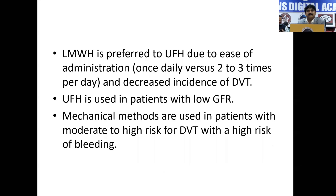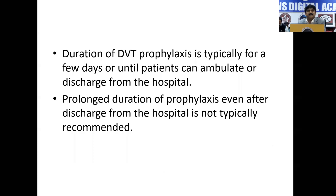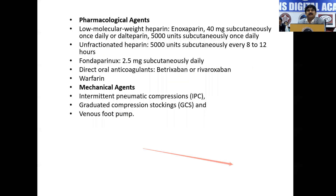Duration of DVT prophylaxis is typically for days or until the patient can ambulate and be discharged from the hospital. Prolonged duration of prophylaxis even after discharge is not typically recommended. Pharmacological agents: heparin — enoxaparin 40 mg subcutaneously once daily, or dalteparin 5,000 units subcutaneously once a day. Unfractionated heparin 5,000 units subcutaneously every 8 to 12 hours. Fondaparinux 2.5 mg subcutaneously daily. Other newer anticoagulants like rivaroxaban or apixaban can be used. For long-term management of DVT and pulmonary embolism, warfarin can also be used.